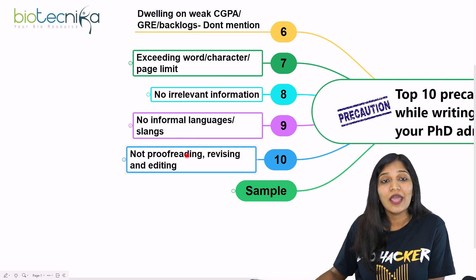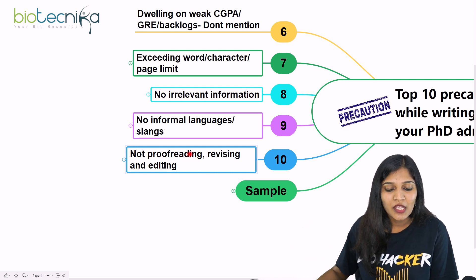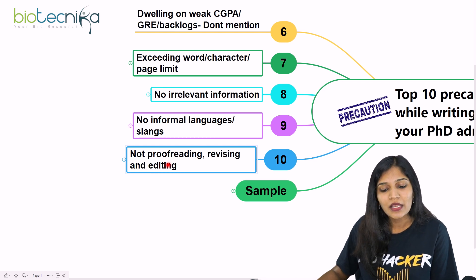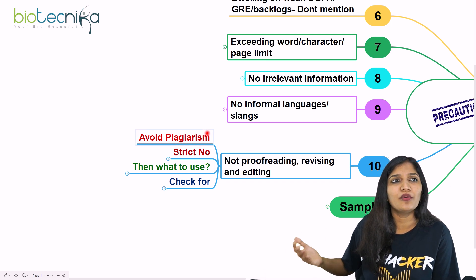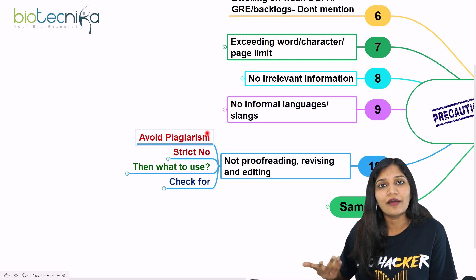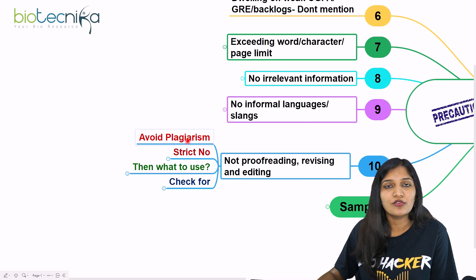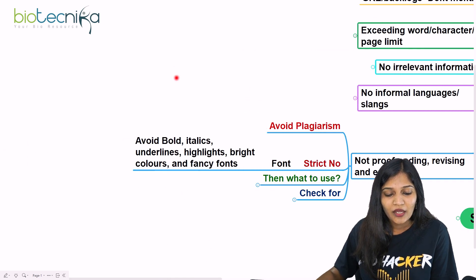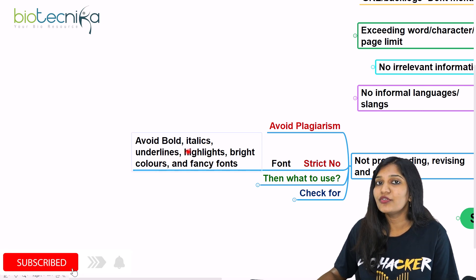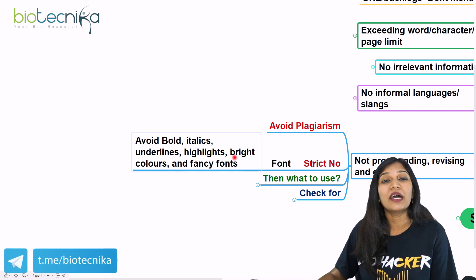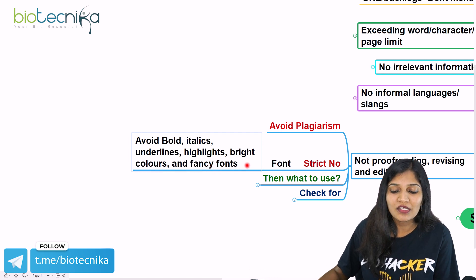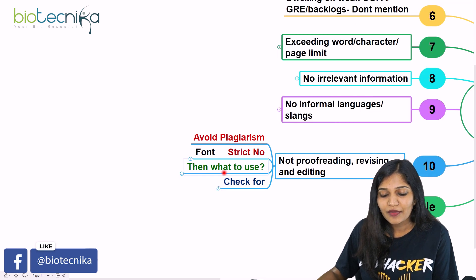The tenth and final point: proofreading. Always revise and edit your SOP. Avoid plagiarism — do not copy from any source and paste it as is. Use an online plagiarism checker to verify. Also, strictly avoid formatting issues: do not bold, italicize, underline, or highlight text with bright colors. Do not use fancy fonts. Always use black text with no bright colors.